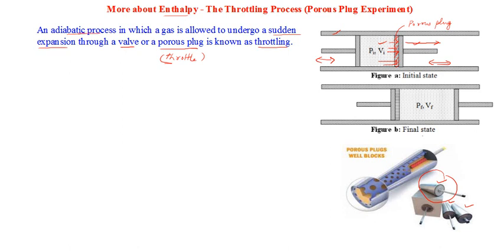The final state of the cylinder-piston system is shown in Figure B. The porous plug has remained in its position. The left piston has moved all the way so that all the gas that was in the left chamber has been forced through the porous plug to the right side. Let Pf be the final pressure and Vf be the final volume of the right chamber.